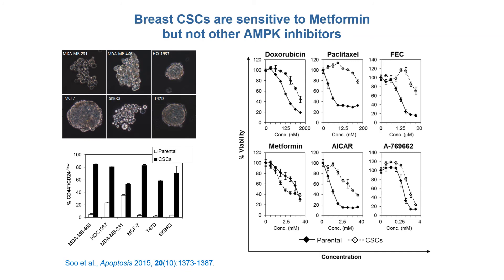In a separate study, we also showed that breast cancer stem cells are inherently more sensitive to metformin, but resistant to other chemotherapeutic agents. Notably, metformin is an AMP-activated protein kinase activator that is a relatively safe drug widely used for the treatment of type 2 diabetes, obesity, and polycystic ovarian syndrome. We also tested other AMPK activators such as AICAR and A769662; however, no such selective sensitivity was observed in breast cancer stem cells treated with these agents, suggesting that the effects of metformin could be independent of AMPK.